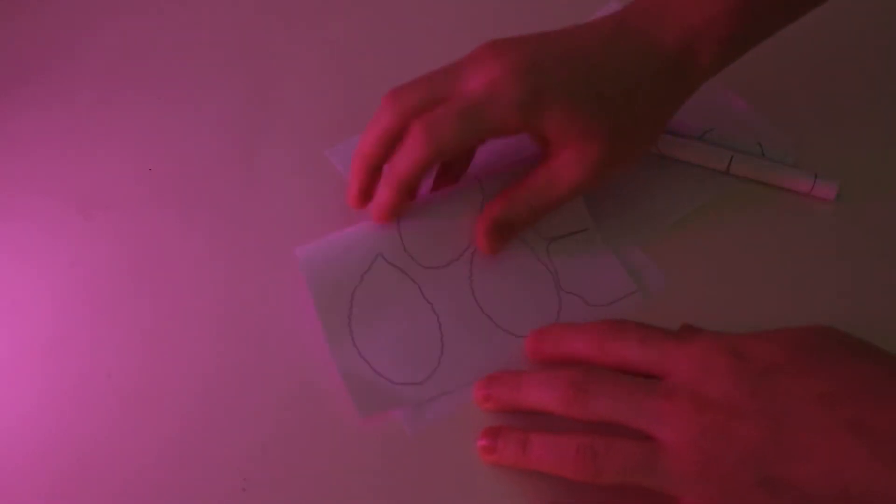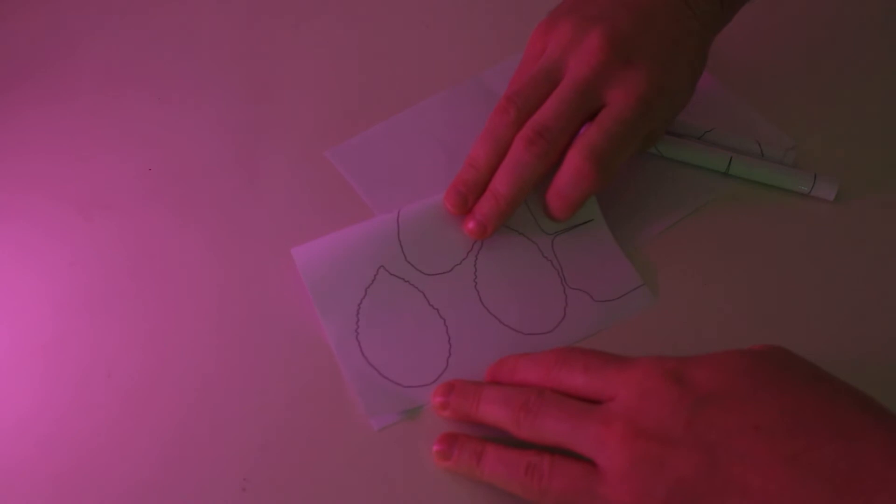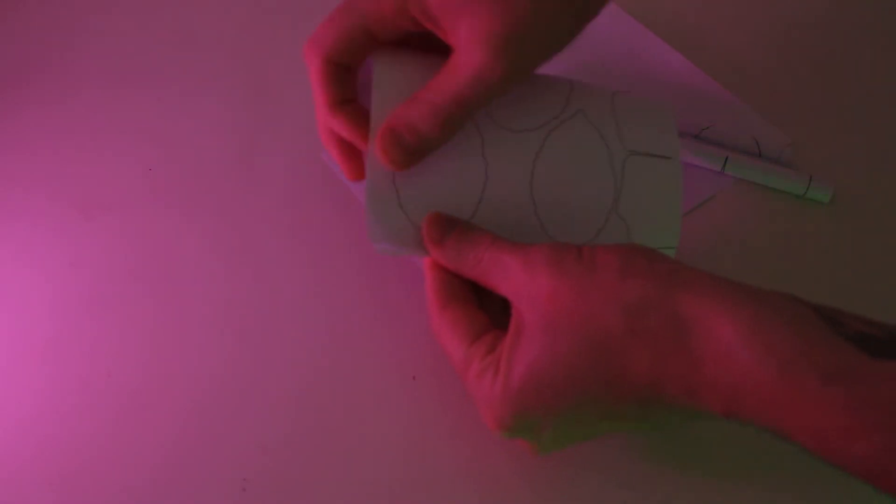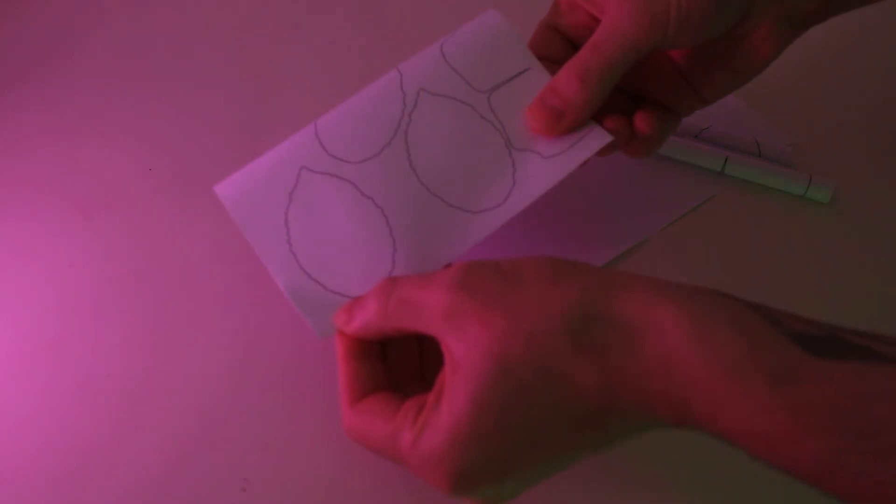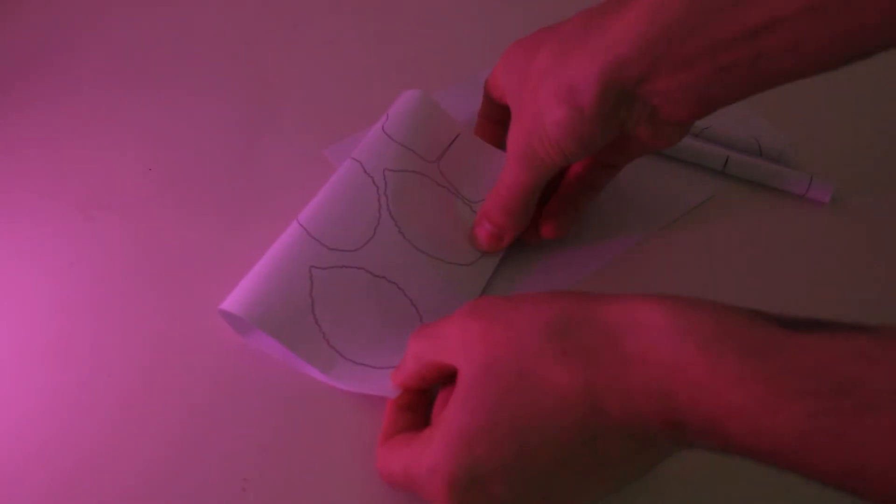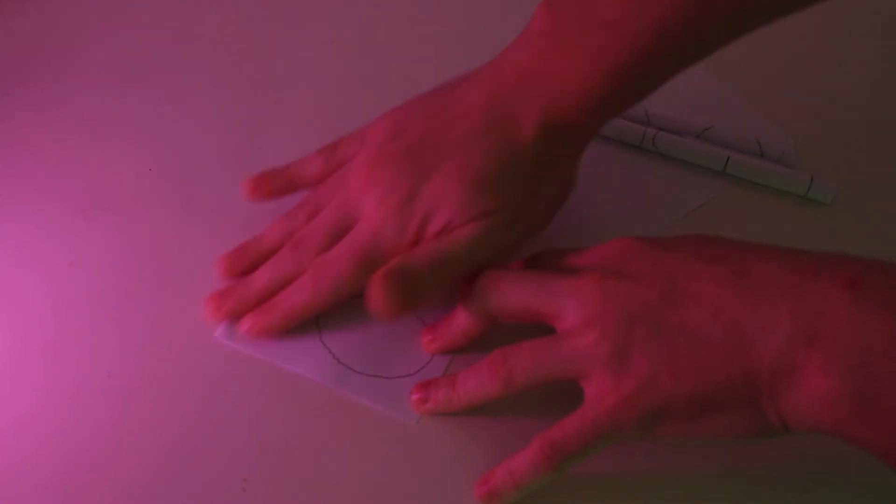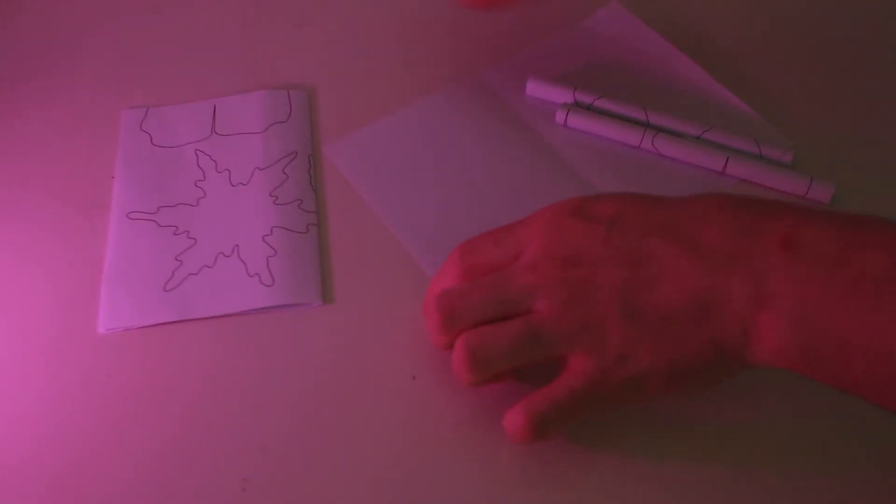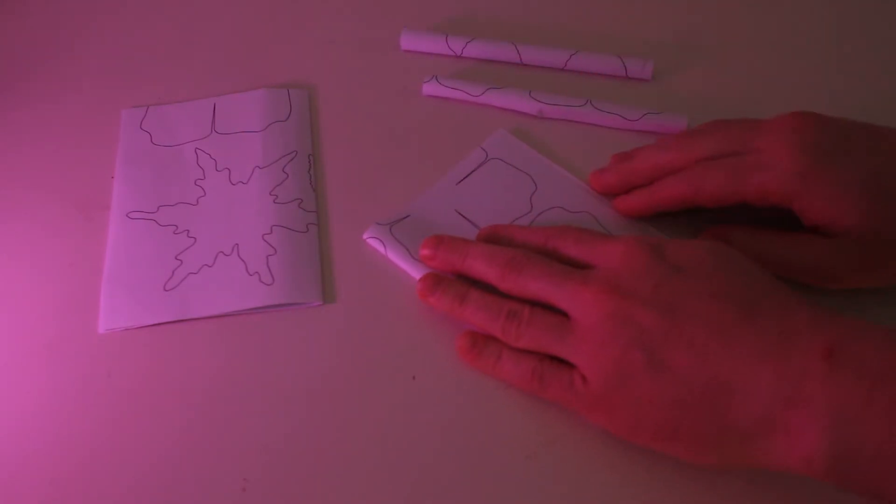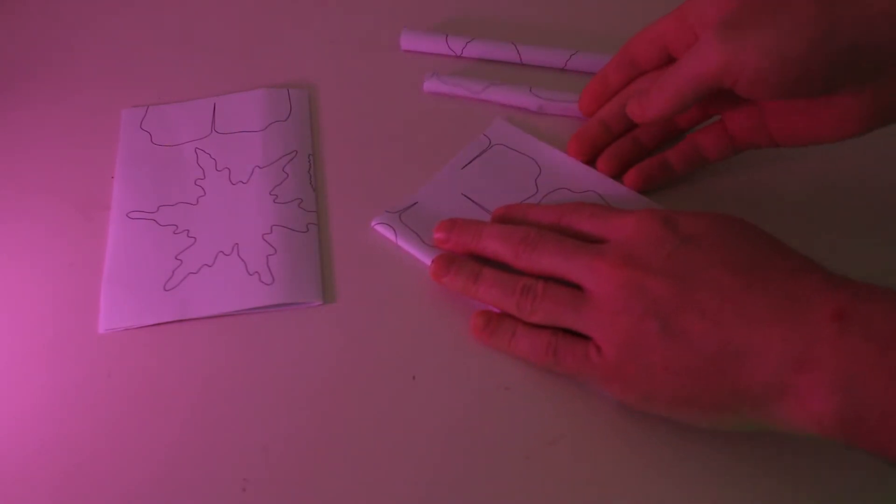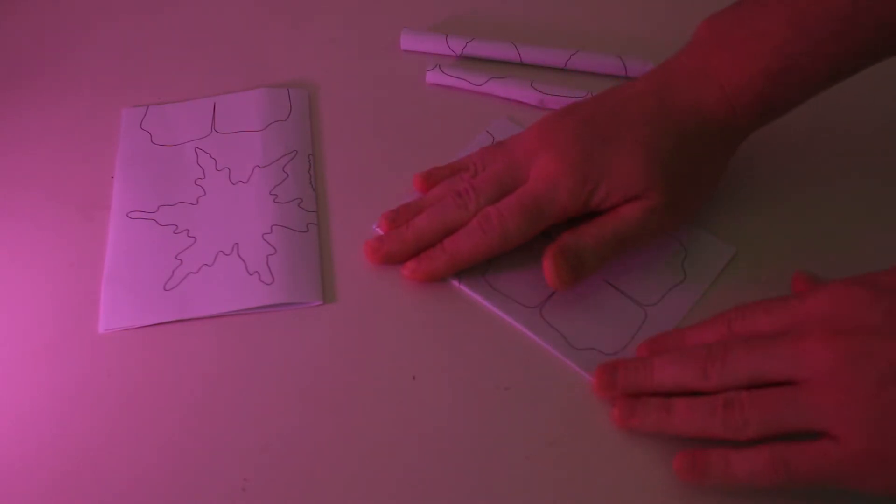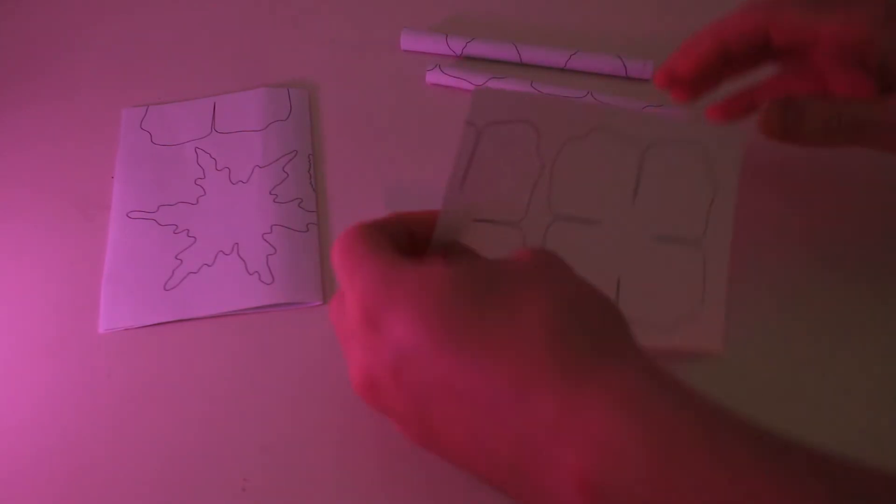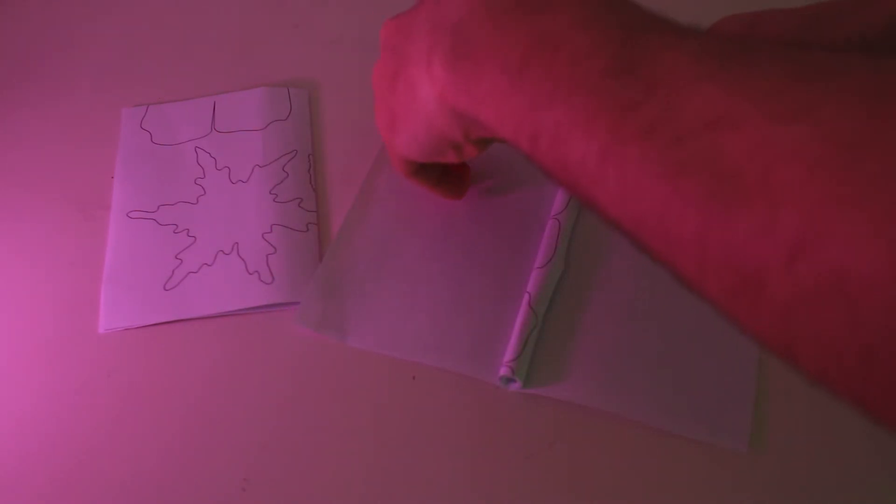Fold the piece of paper again to find the middle point. Do this for both pieces. Now stick the tube in the middle of the half piece of paper. This will add structural rigidity to the wing.